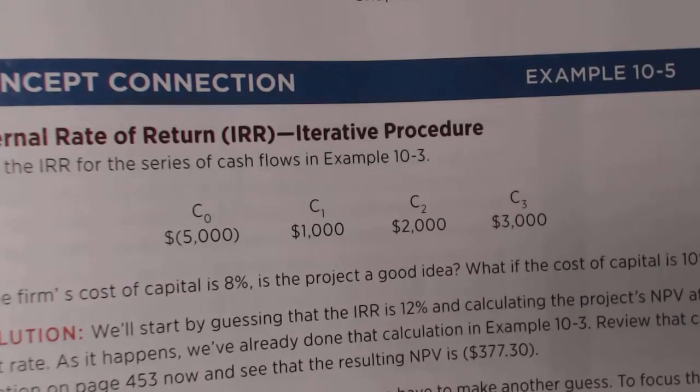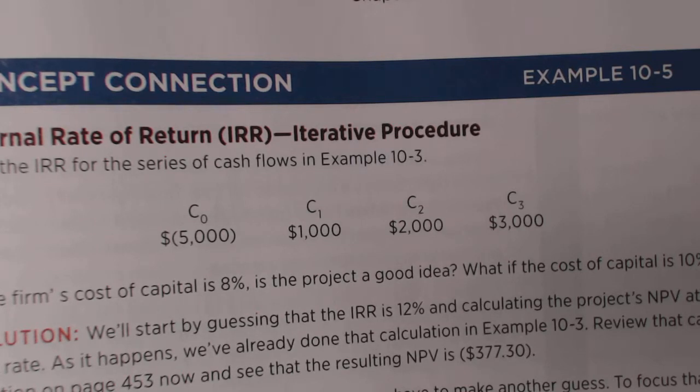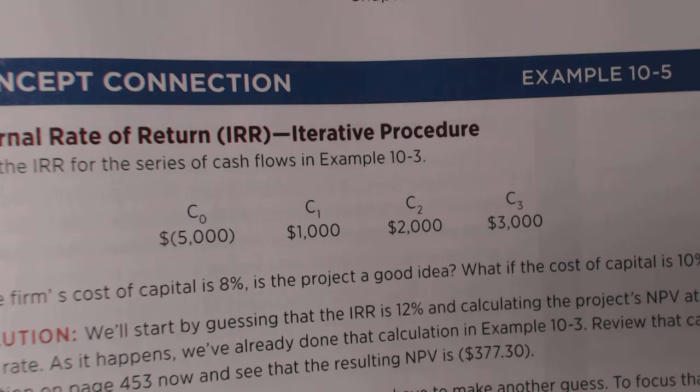So the first one is you are given $5,000, and that is you're given $5,000 right here to start the project. And the first year you're going to make $1,000, the second year you're going to make $2,000, and the third year you're going to make $3,000.